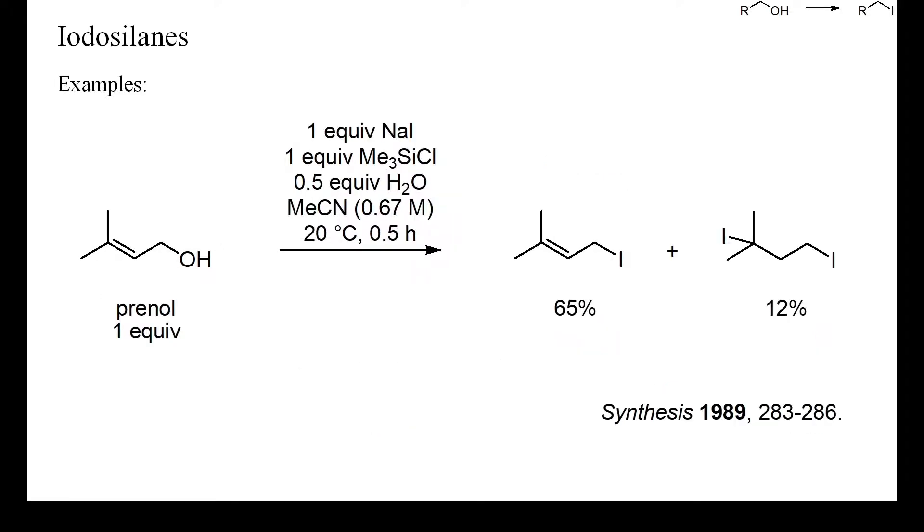Treatment of prenol with only one equivalent of chlorosilane in the presence of water again caused some by-product formation, namely addition of hydrogen iodide to the double bond. Because water will compete with the silylation of the hydroxyl group of prenol, this reaction appears to be more an acid-catalyzed deoxyiodination than a reaction proceeding exclusively via silyl ethers.